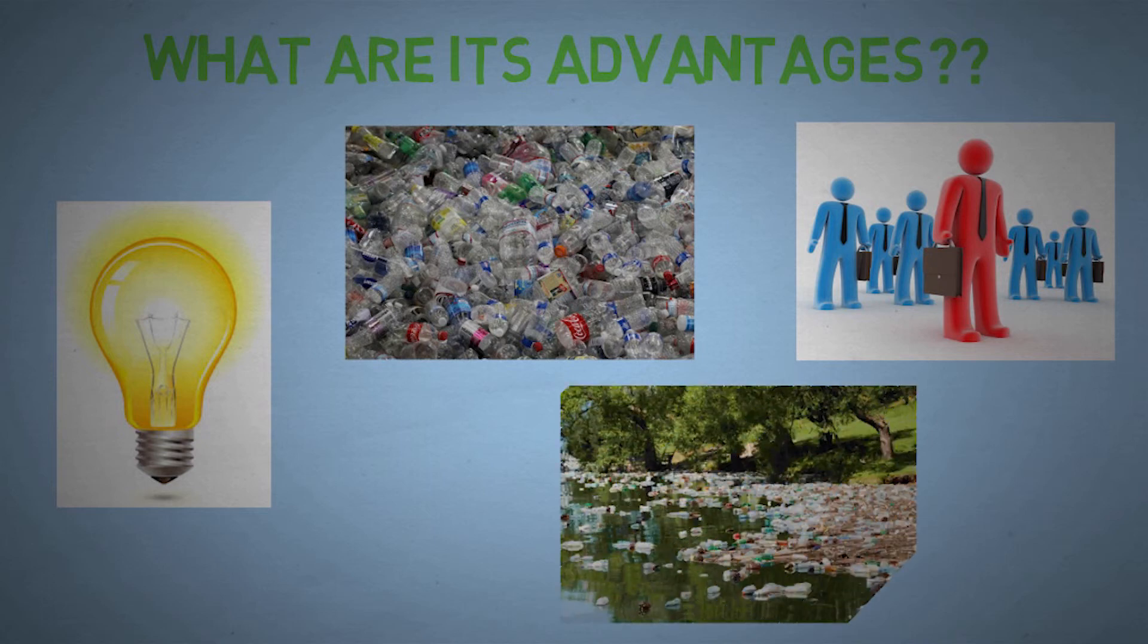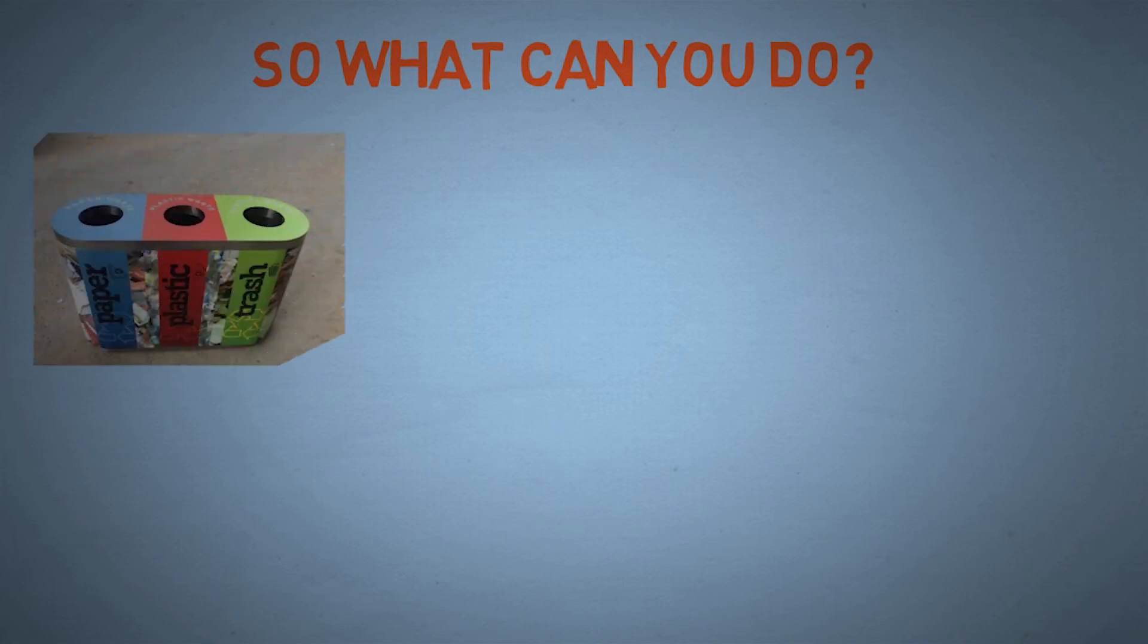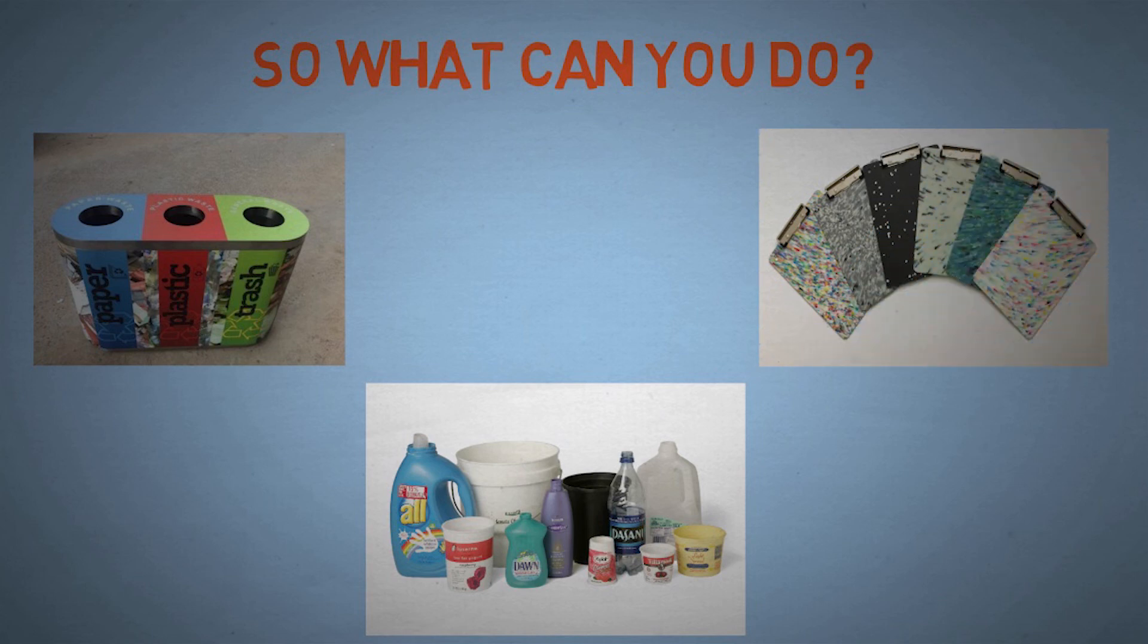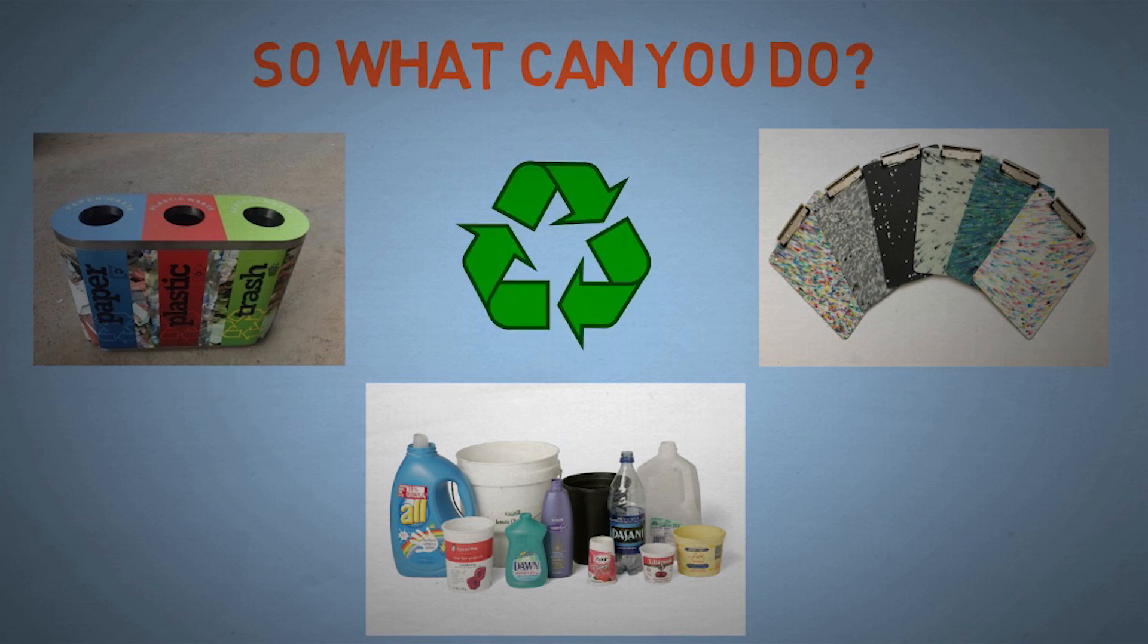So what can you do? Here are some ways you can help. Firstly, make sure that the waste at your home and school is segregated into different groups. Next, ensure that waste plastic containers, bottles, etc. are sent for recycling. Third, always try to buy recycled or recyclable plastic products. And remember, every little bit counts.